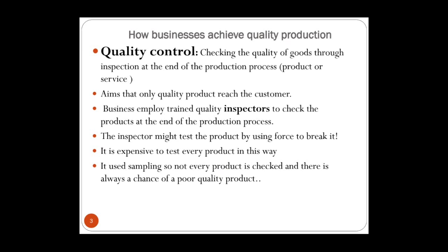Quality control is checking the quality of goods through inspection by hiring inspectors at the end of a production process. This is called the traditional way of checking quality. The production process has several levels, and at the end of the process goods are checked and inspected by trained inspectors. The target is that only quality products reach the customers.